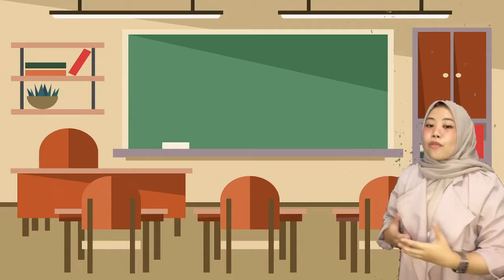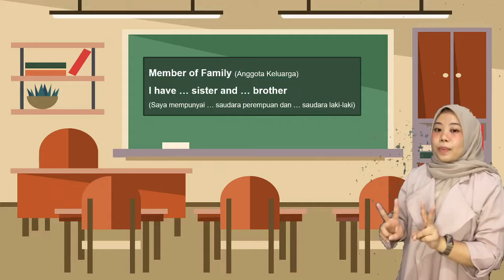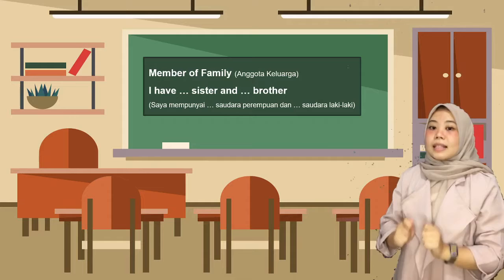Next, if you want to share information about your family member, you can say 'I have two sisters and one brother.' For example, saya mempunyai dua saudara perempuan dan satu saudara laki-laki. Jadi, menggunakan kata 'I have,' artinya saya mempunyai.